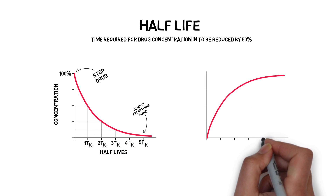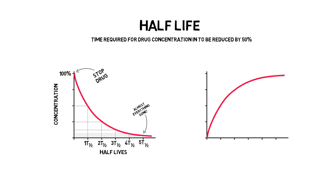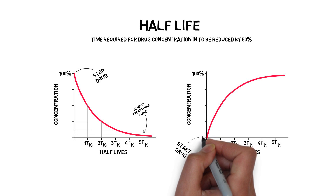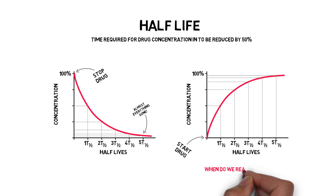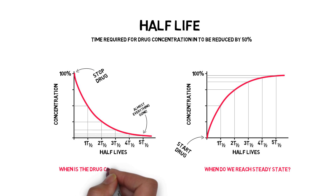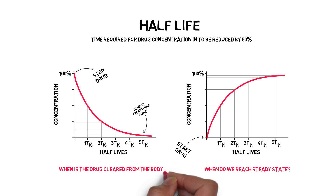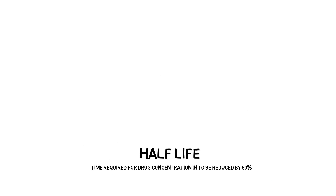This graph can also be flipped. If we start with nothing, it will take about five half-lives before the drug will reach optimal serum concentrations. So half-life can be used to calculate when you'll reach this steady state, and it can also help you to calculate when the drug is cleared from the body. The concept of half-life also helps you to predict what happens to the drug concentration when either clearance or volume of distribution are affected.